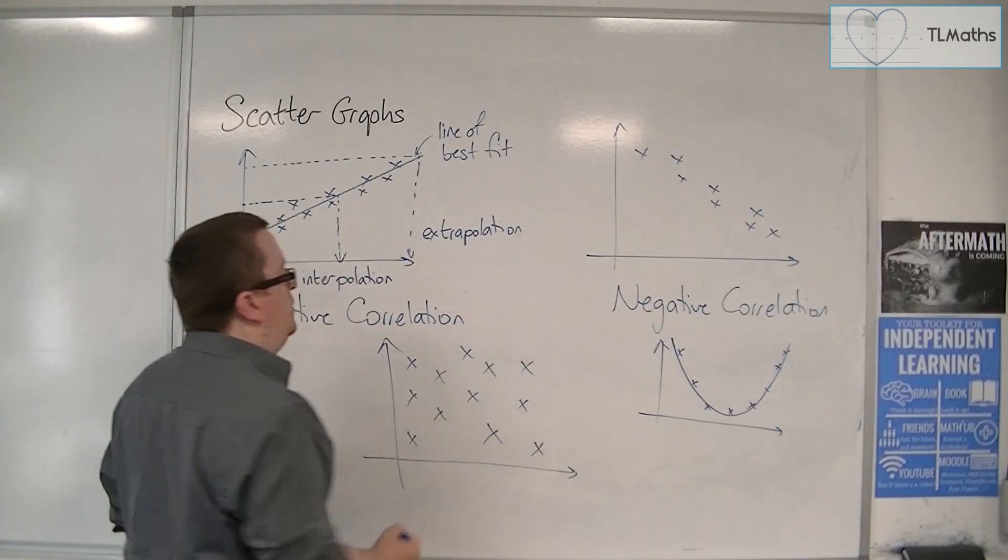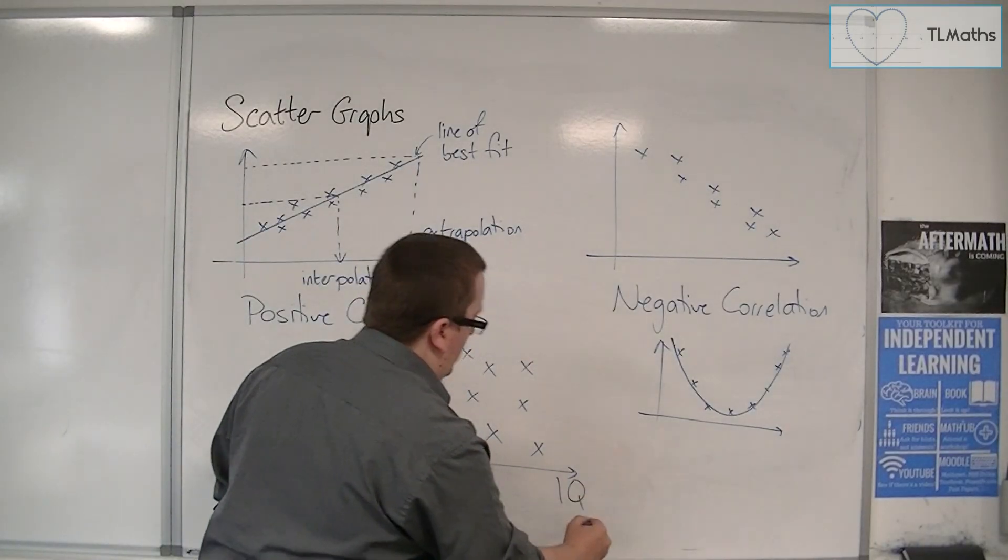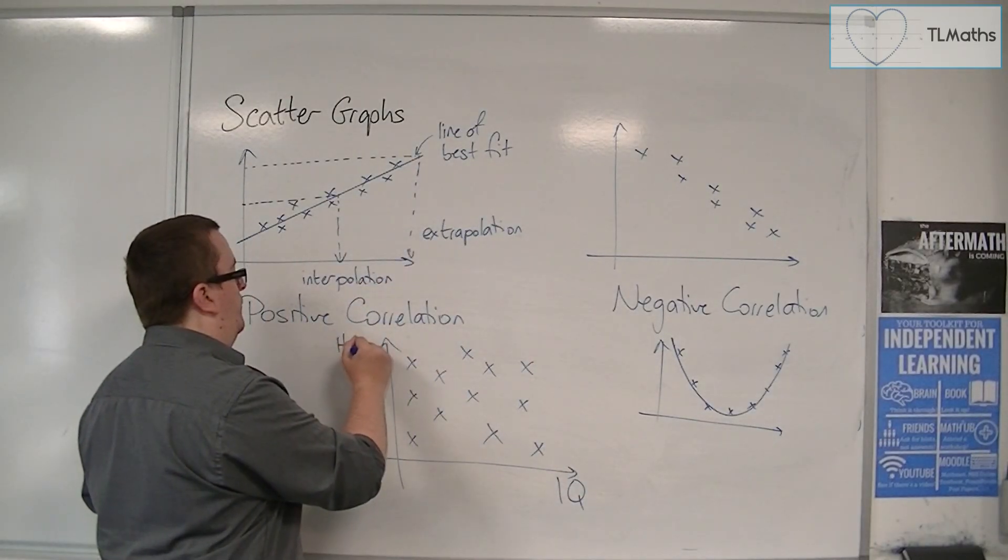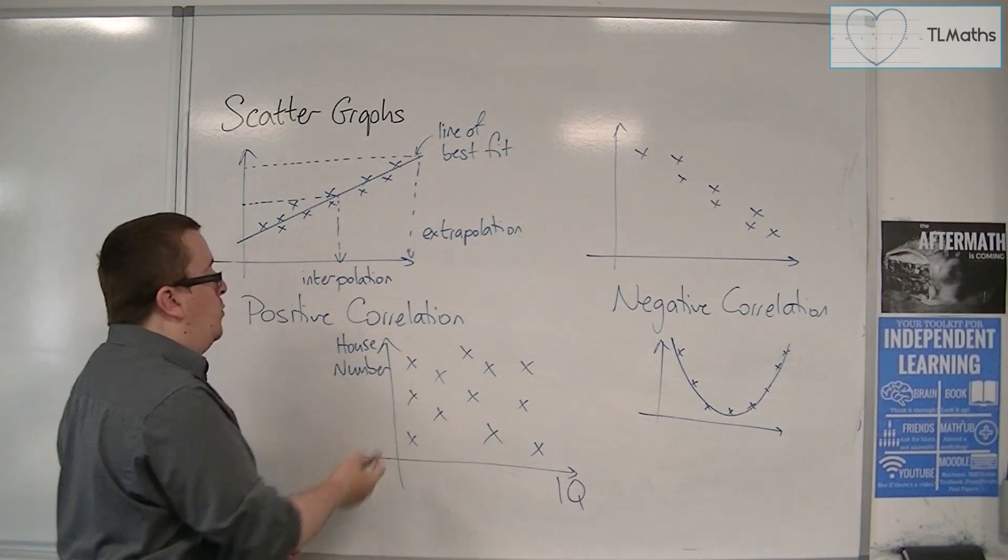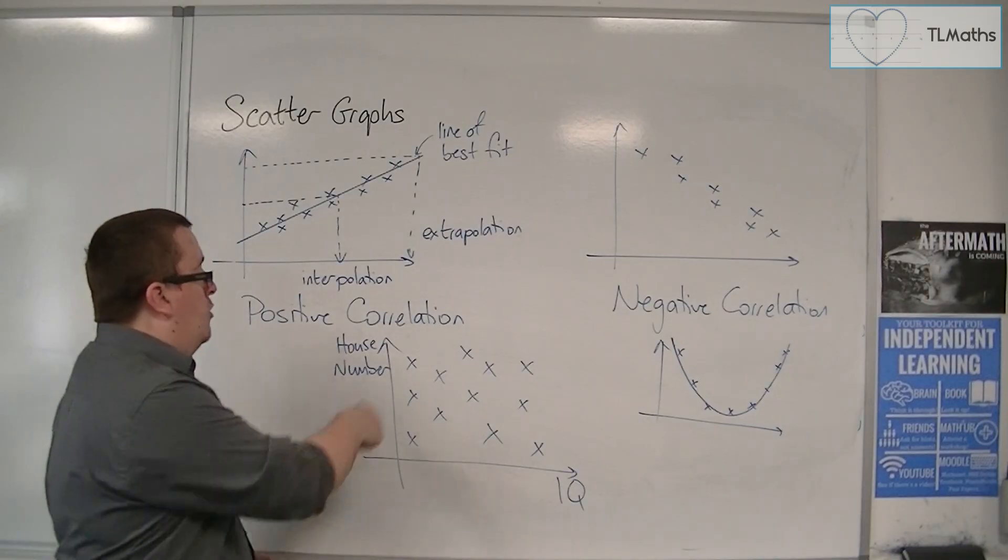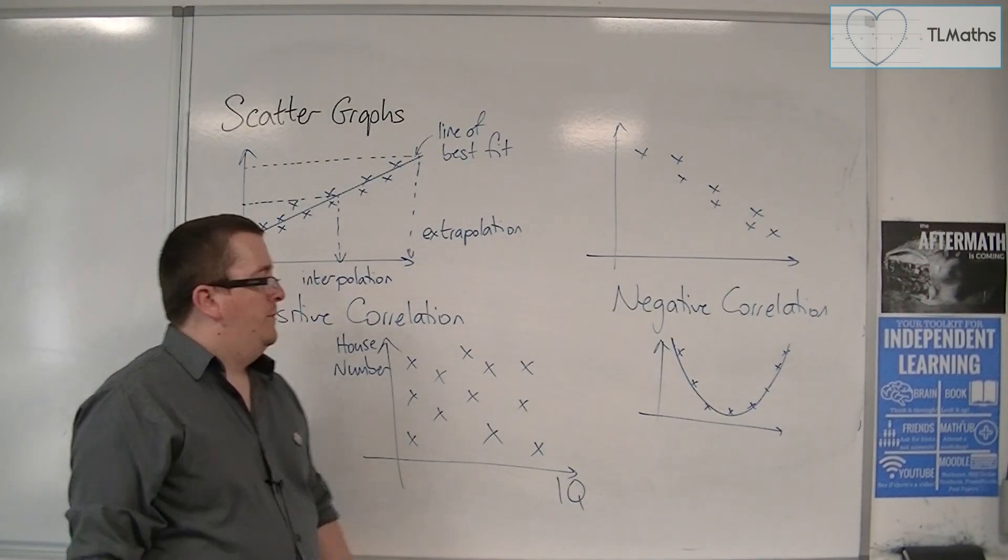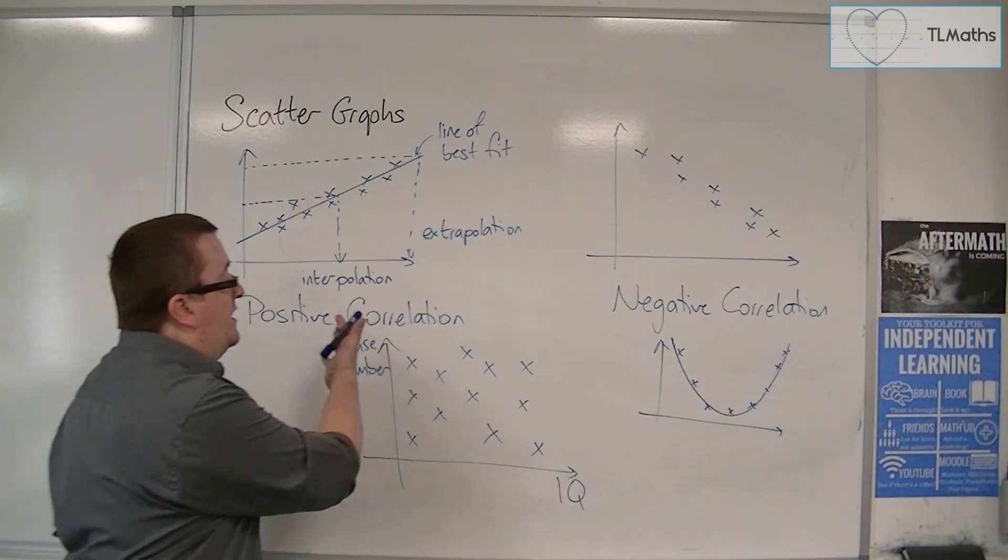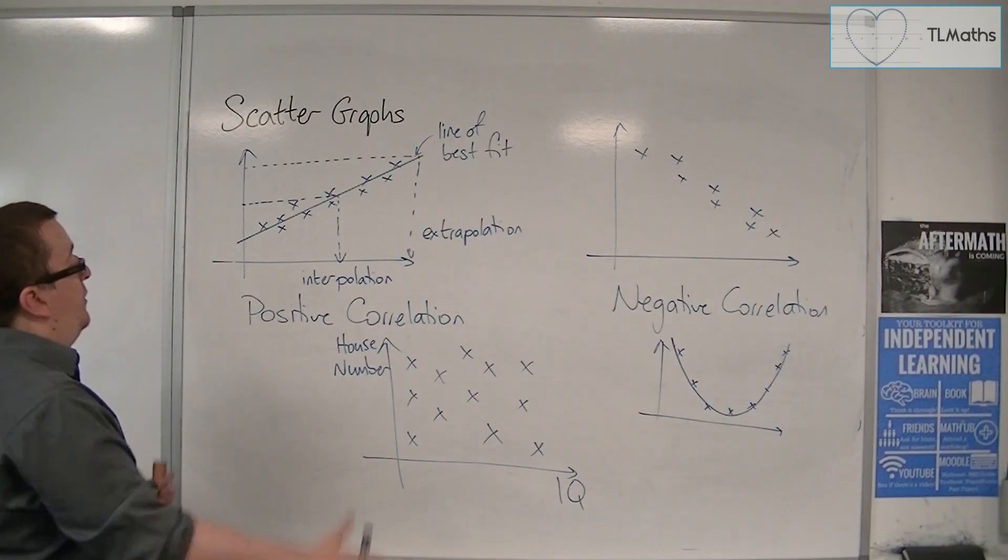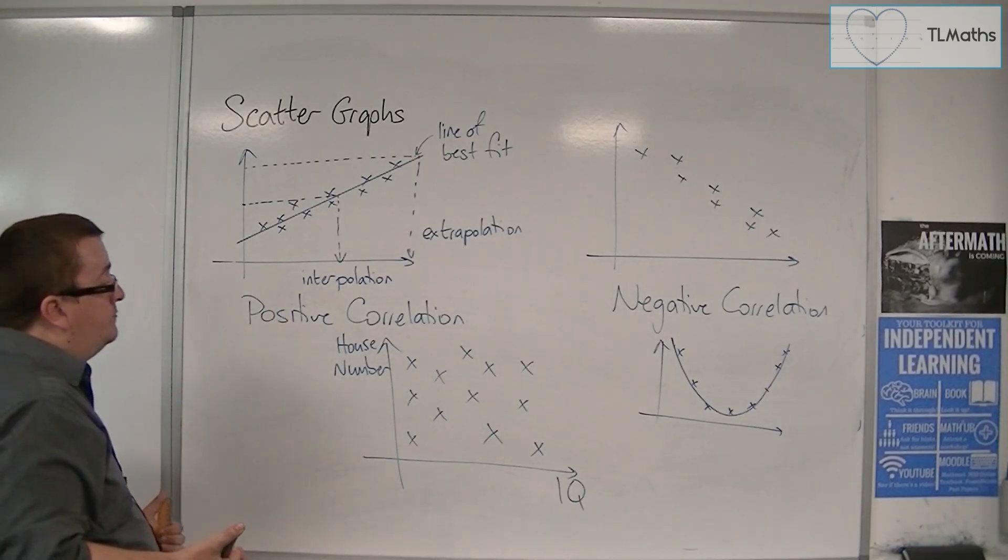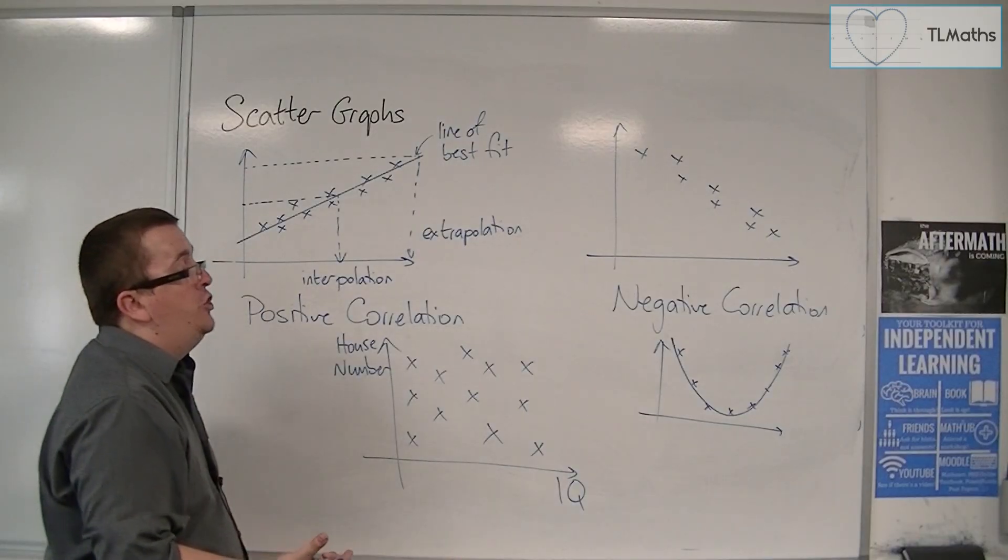But you can have no correlation, where clearly there is nothing relating the two sets of data. So, for example, you might plot IQ against house number. And clearly, it doesn't matter where you live along a road that would change your IQ. So the higher the house number, that doesn't mean the higher your IQ, or vice versa. So positive correlation and negative correlation, no correlation, these are the three situations that you can meet. And they relate to different situations.